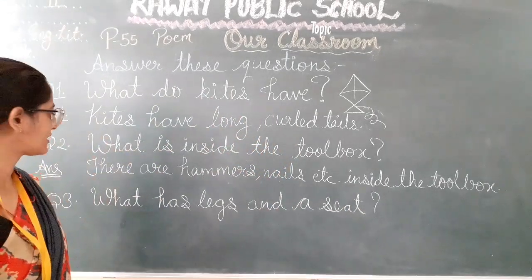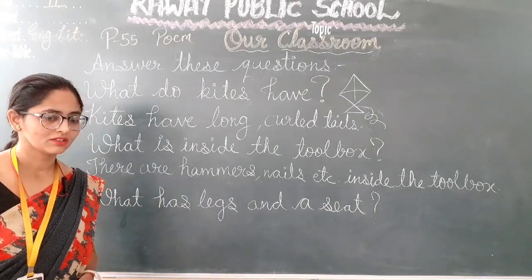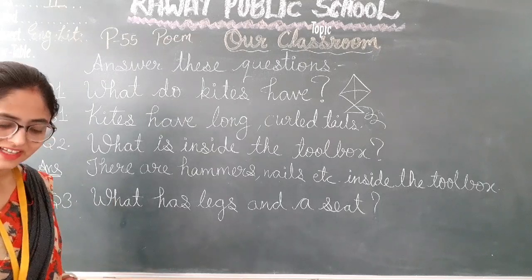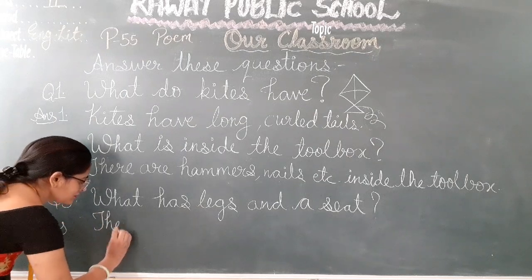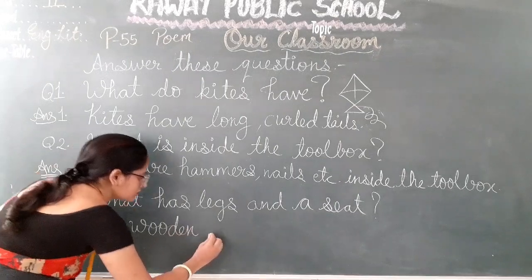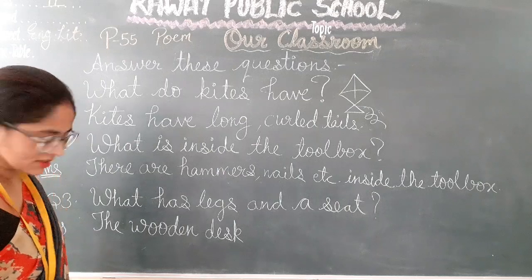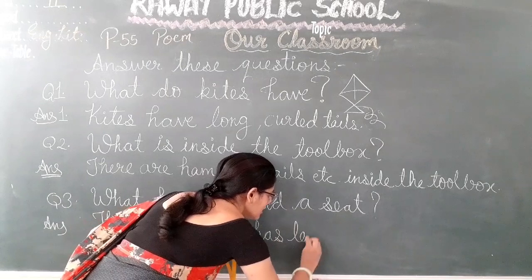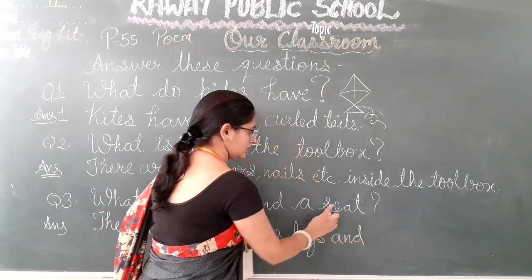Now just tell me, as we have read in the poem, what is legs and seat both? The right answer is the wooden desk. I am writing the answer — the wooden desk has legs and a seat.